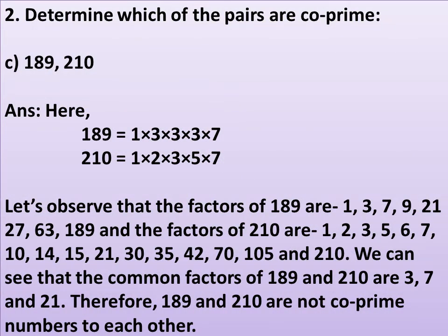For the pair 189 and 210: 189 = 1 × 3 × 3 × 3 × 7, and 210 = 1 × 2 × 3 × 5 × 7. The factors of 189 are 1, 3, 7, 9, 21, 27, 63, and 189. The factors of 210 are 1, 2, 3, 5, 6, 7, 10, 14, 15, 21, 30, 35, 42, 70, 105, and 210. The common factors of 189 and 210 are 3, 7, and 21. Therefore 189 and 210 are not co-prime numbers to each other.